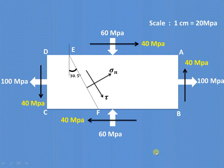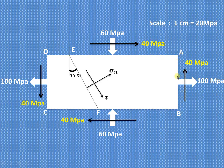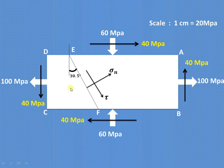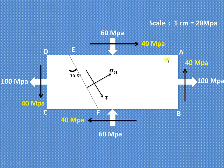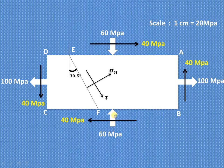Let us try to understand how to solve the example on principal planes and stresses by using the Mohr's circle method. As shown in the figure, planes AB and CD are subjected to a tensile stress of 100 MPa. Similarly, planes AD and BC are subjected to a compressive stress of 60 MPa.